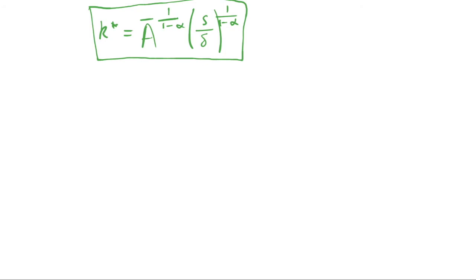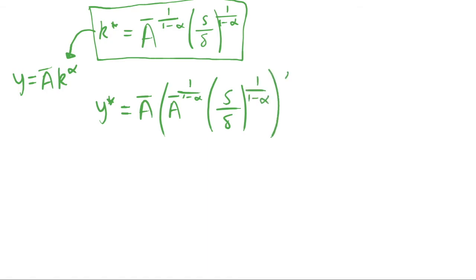So let's use this to find our output per capita. A result that we've been using a lot is the fact that our lowercase y equals A bar multiplied by capital per capita to the alpha. So all we need to do is substitute in this k star for this k here, and then that will give us our y star, our output per capita when we're at steady state. So let's do that. So now y star equals A bar multiplied by A bar, which is as we can see above, to the power of this, multiplied by this, this is just substituting this term in. And then this is all to the power of alpha.